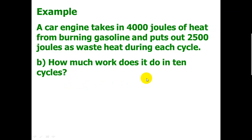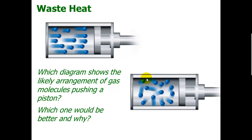The next topic is waste heat. We're never going to be able to get all that energy from the incoming heat into work. You always have a lot of waste heat going out. Think about these two pistons. You have gas molecules inside. Which diagram shows the likely arrangement of gas molecules pushing a piston? And which one would be better and why?